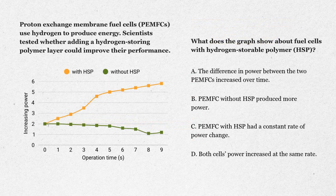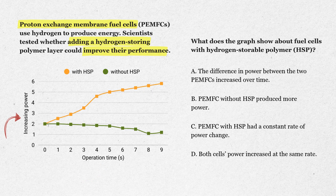In the next problem, we're looking at a graph about proton exchange membrane fuel cells, or PEMFCs. Scientists wanted to test if adding a hydrogen storing polymer, labeled here as HSP, would improve performance. On the x-axis we've got operation time, and on the y-axis we've got increasing power. The orange line is the cell with HSP, and the green line is the one without HSP. At the start, both cells are about the same, around 2 units of power.